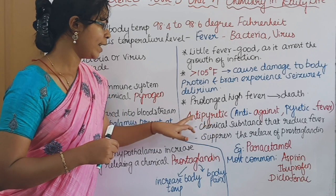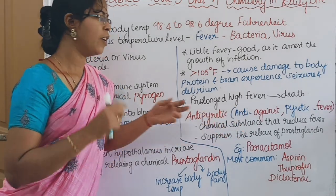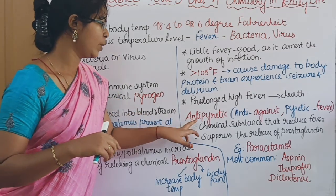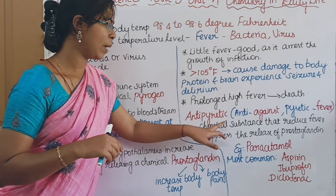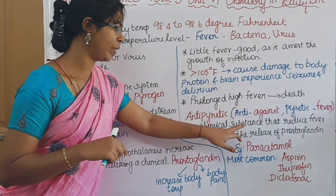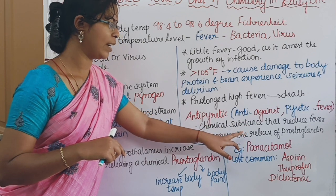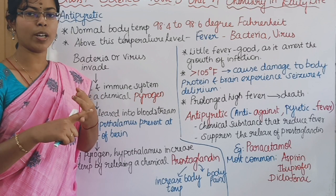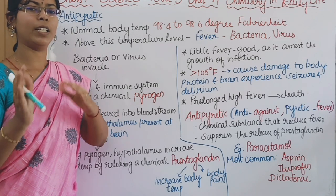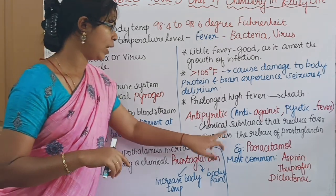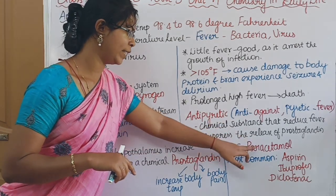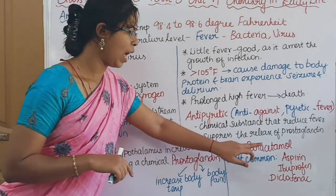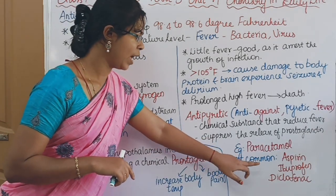Antipyretic: 'anti' means against, and 'pyretic' means fever. An antipyretic tablet contains a chemical substance that reduces fever by suppressing the release of prostaglandin. The most common antipyretic and anti-inflammatory drugs are aspirin, ibuprofen, and diclofenac.